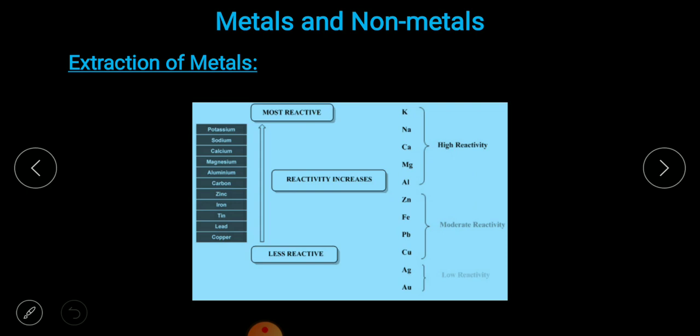Silver and gold don't react with any compound. That's why these are used for making ornaments, because they don't react and so don't lose their shine. The most reactive elements in this activity series are potassium, sodium, calcium, magnesium, and aluminum.